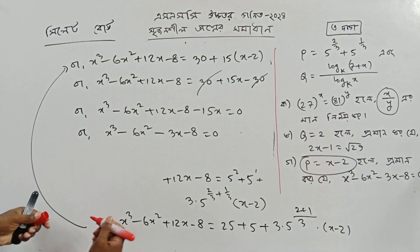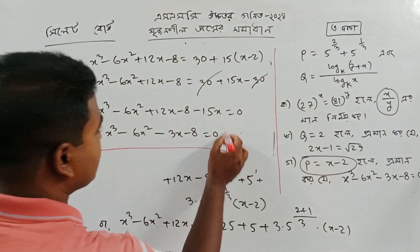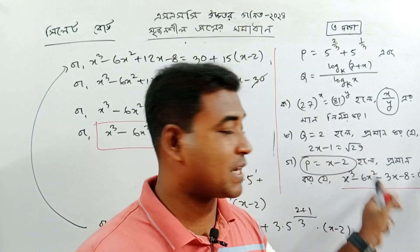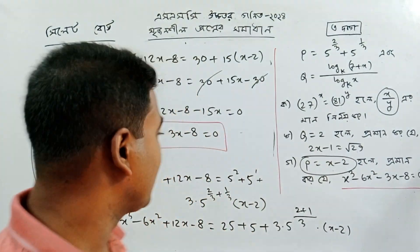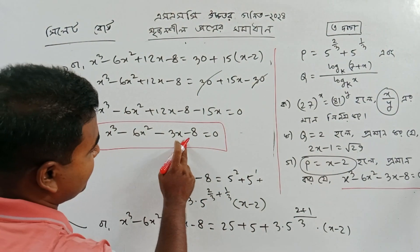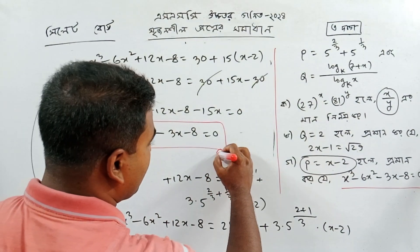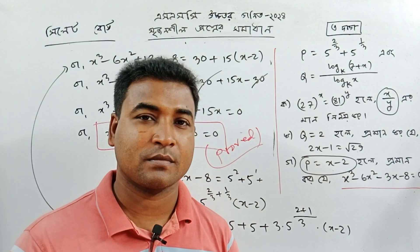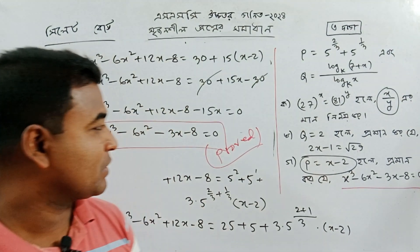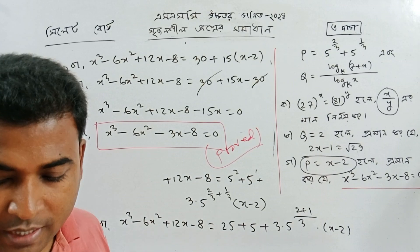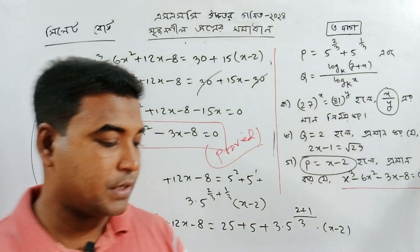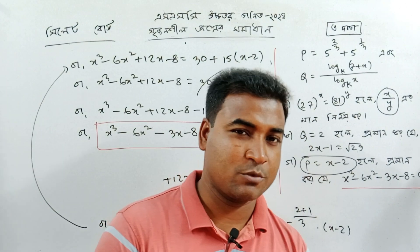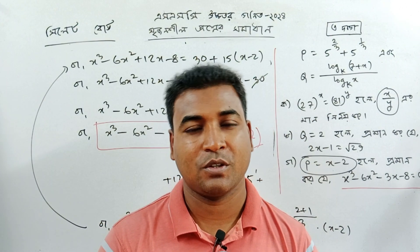So we have confirmed that x cube minus 6x square minus 3x minus 8 equals 0. This matches our original equation, verifying the solution. Thank you so much for watching.